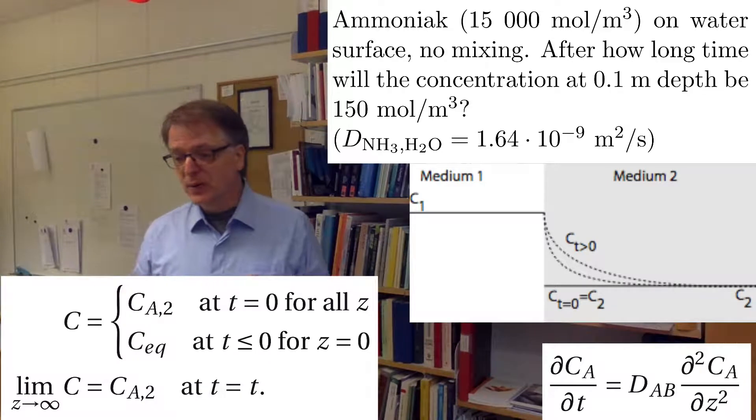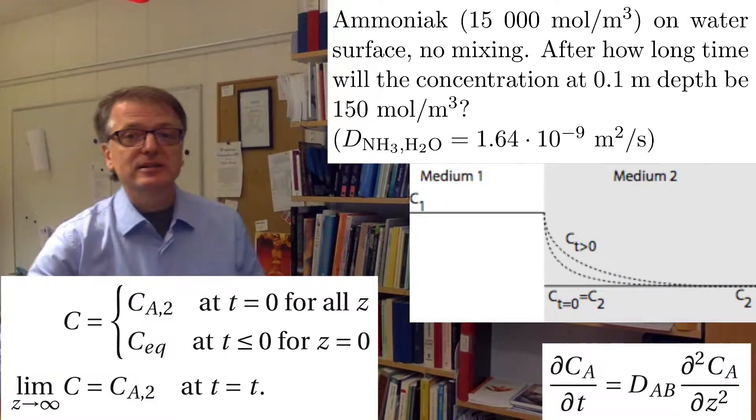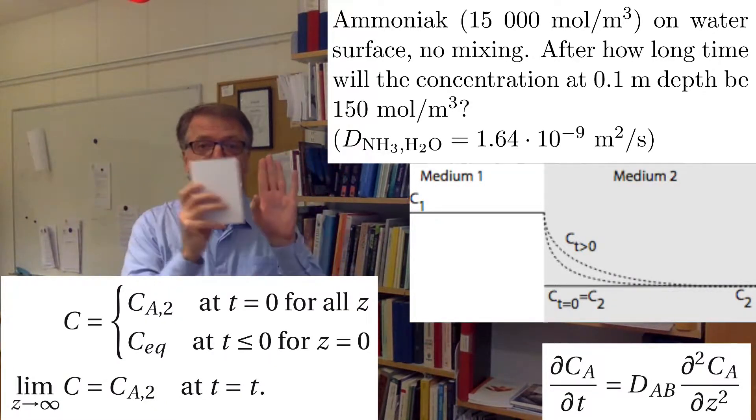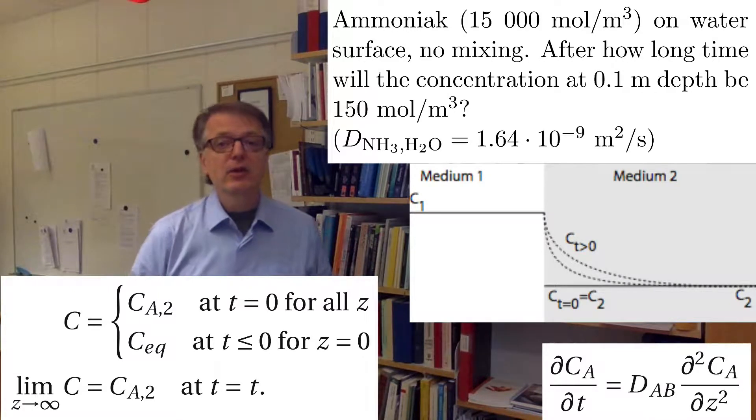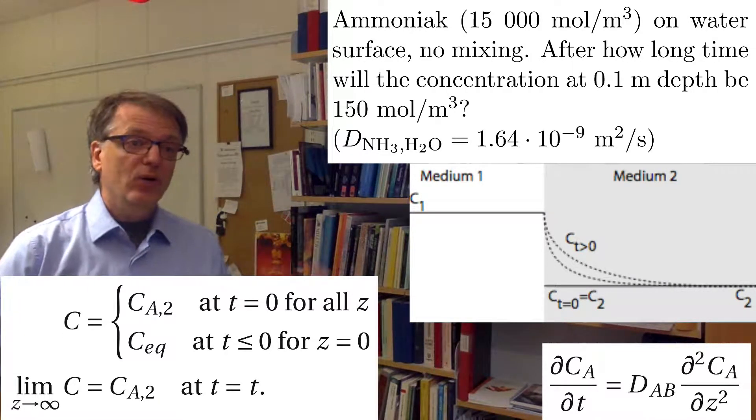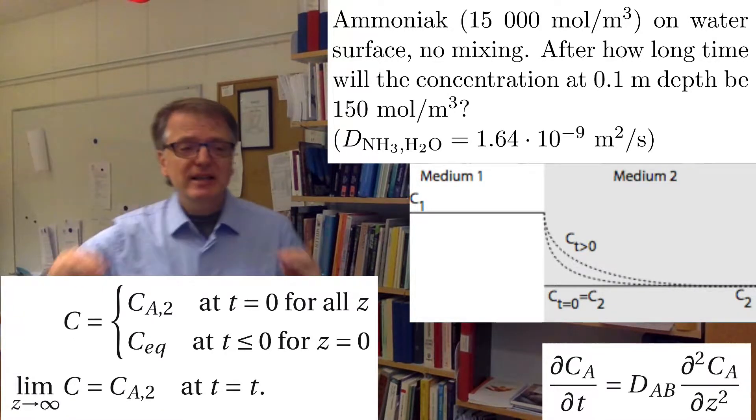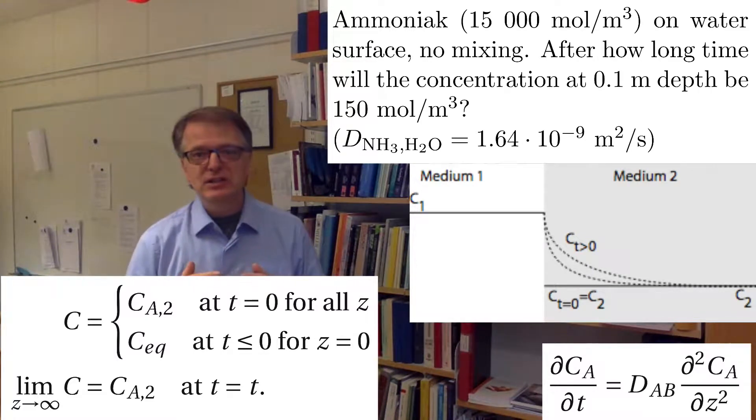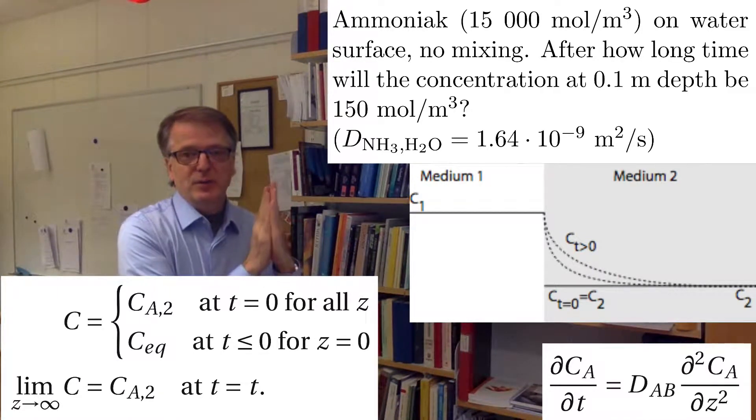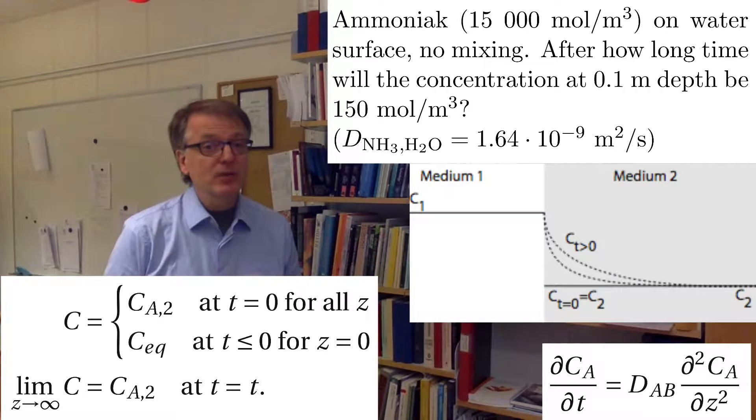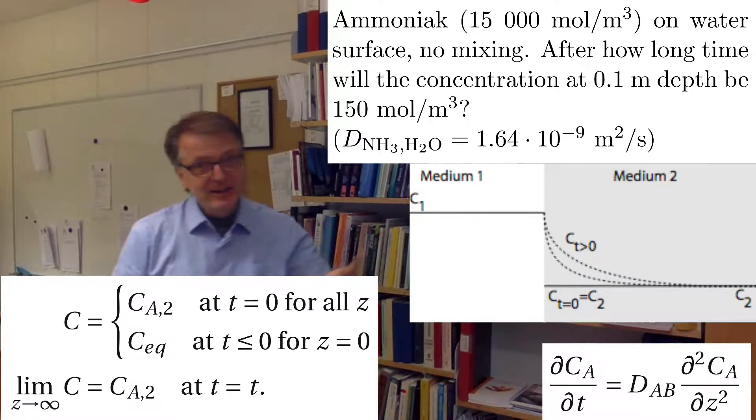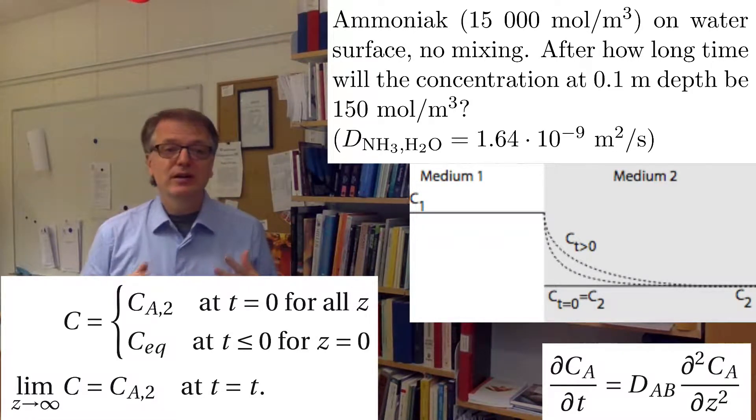At time 0, when this medium has exactly gotten in contact with the other medium, the concentration is the same all over medium 2. But immediately it changes close to the phase boundary, so it comes to the equilibrium concentration, and then it moves into medium 2.